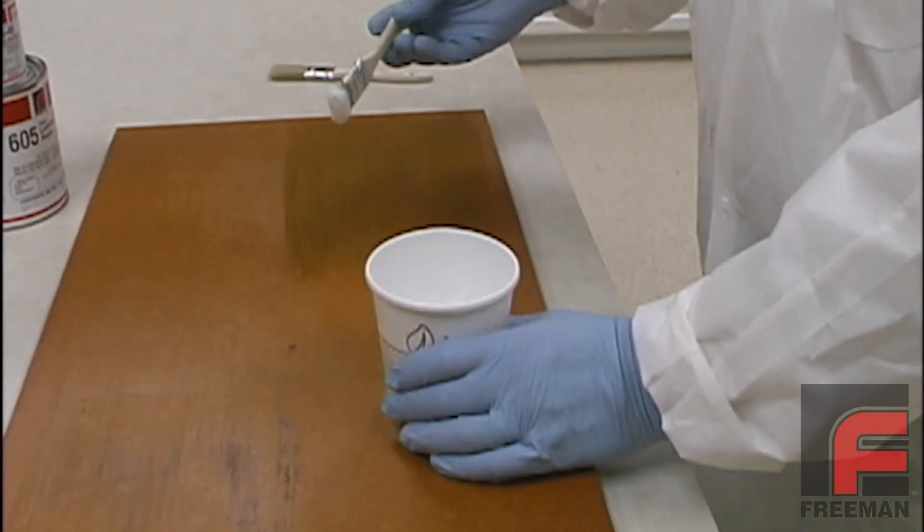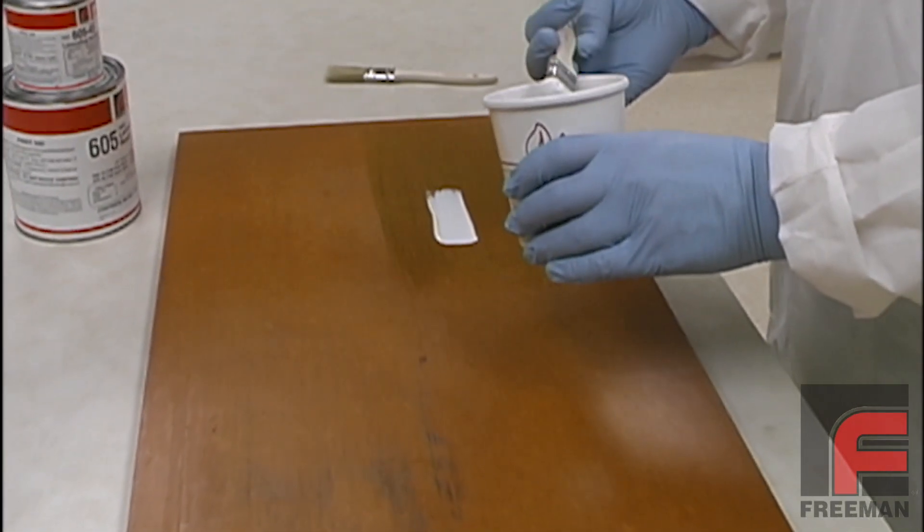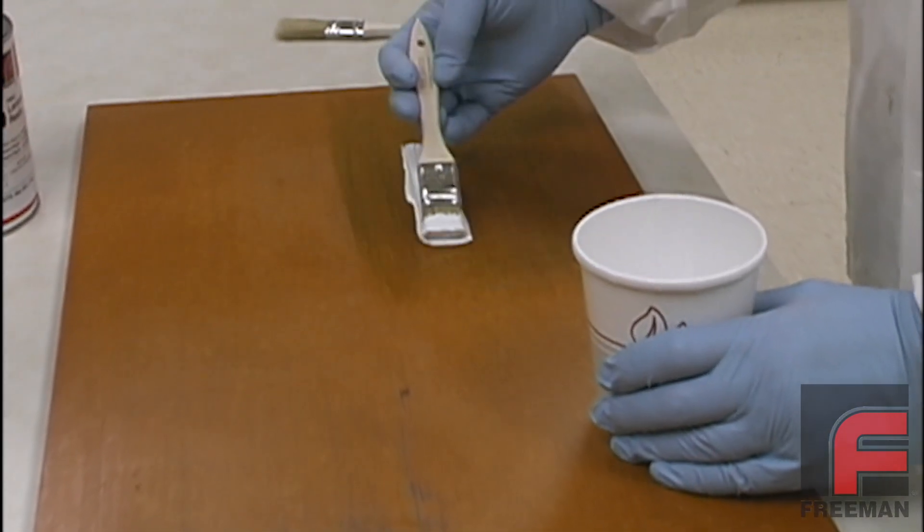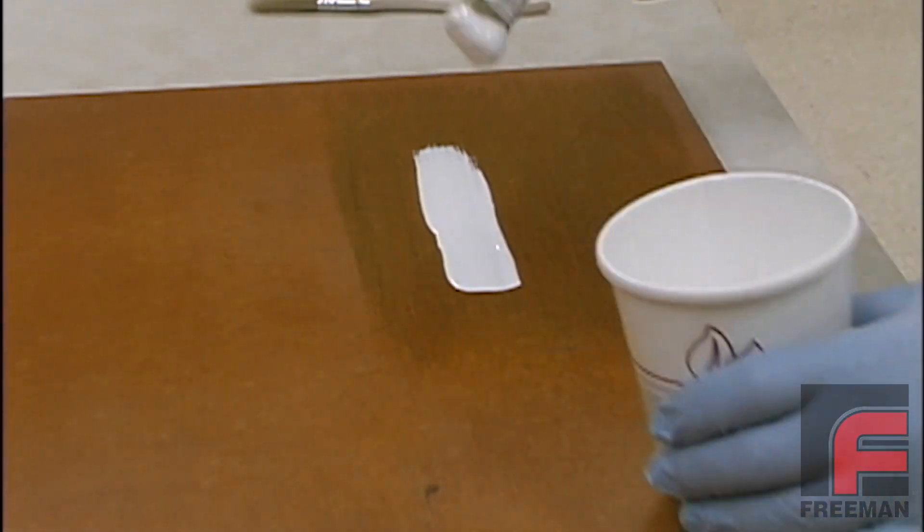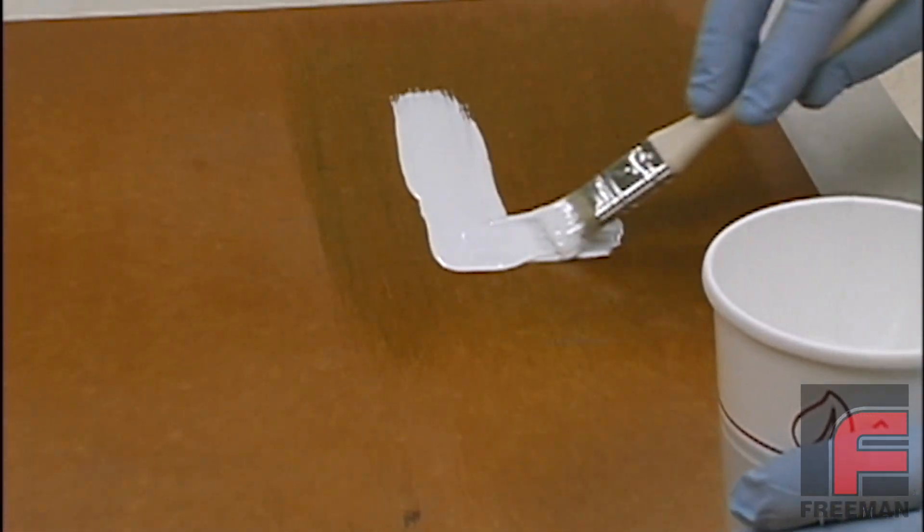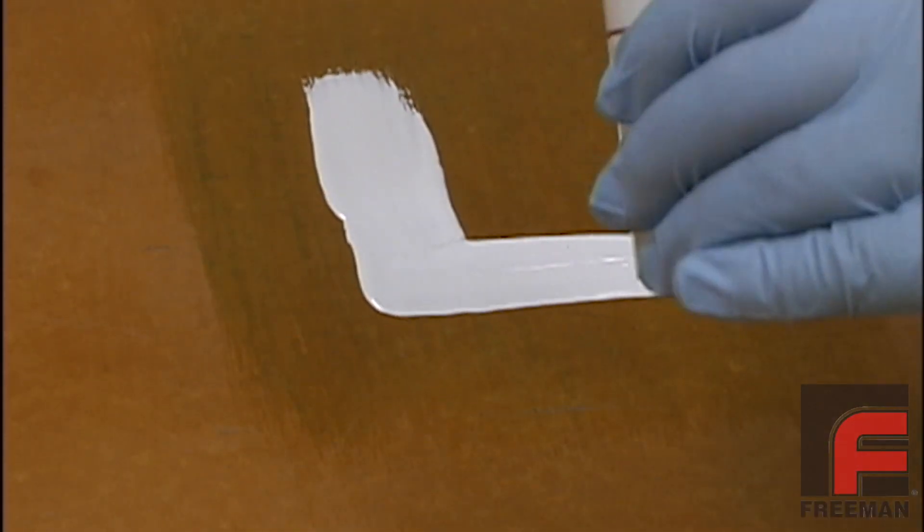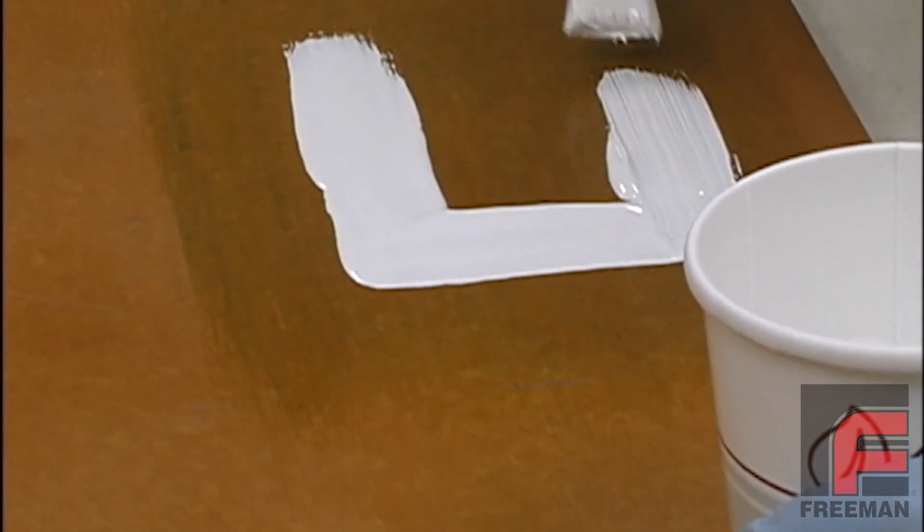We begin with our application of the surface coat directly on our part. We are applying this with a white bristle throwaway brush whose bristles have been cut in half in order to create a stiffer brush. Notice we aren't applying this like a paint, but rather we are flowing it on, creating a layer of material between a 32nd and a 16th of an inch thick. These materials do get hot when they cure, so be careful to avoid large puddles of material.